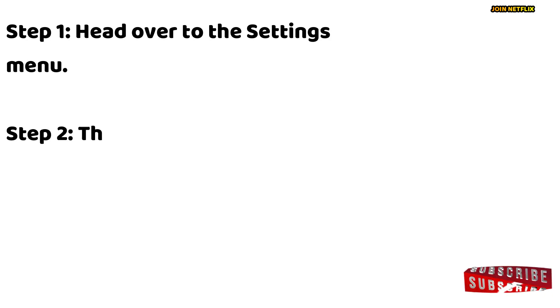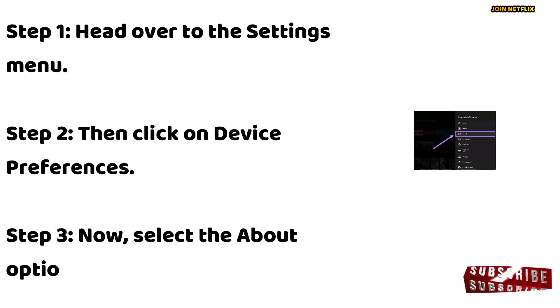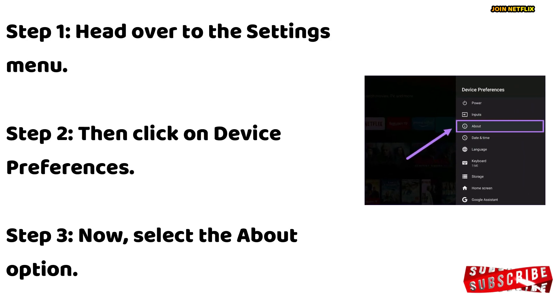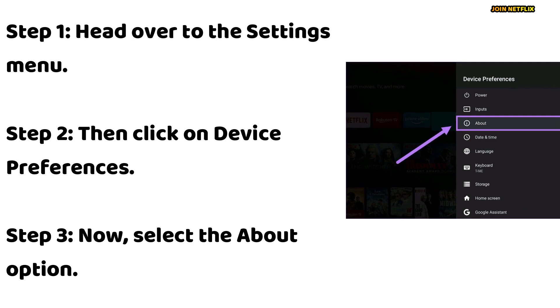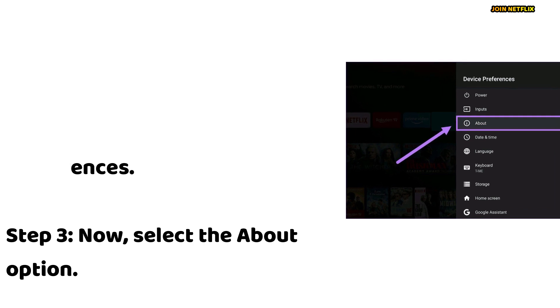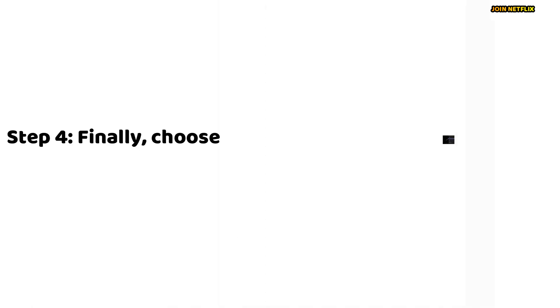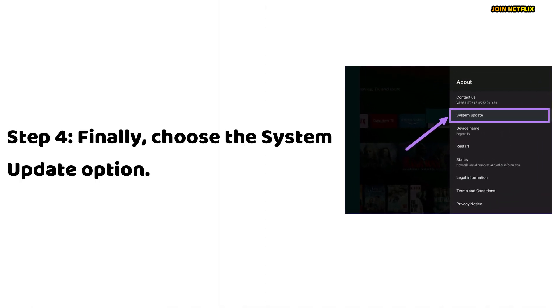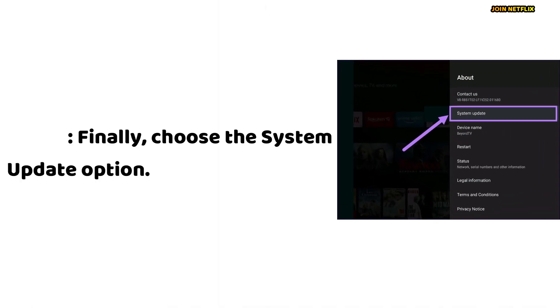Step 1: Head over to the Settings menu. Step 2: Then click on Device Preferences. Step 3: Now select the About option. Step 4: Finally, choose the System Update option.